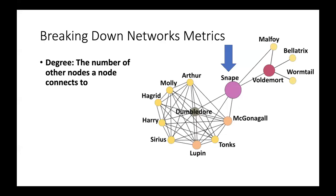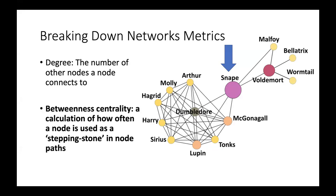In order to look at how nodes are facilitating transitions through the network, we looked at two node metrics. The first being degree - the number of nodes a node is connected to. Looking back at our Harry Potter network, the node Snape has five connections - you can see that by counting the five different lines to other nodes, so the degree of this node is five. The second metric is betweenness centrality - a calculation of how often a node is used as a stepping stone in node paths. Snape would have the highest betweenness centrality because if any of the nodes in the left module wanted to travel to the right module, they would need to pass through Snape. If we were to remove Snape from this network, these modules no longer connect and we have lost the flow between modules. So this Snape node is pivotal for the flow of information across this network.